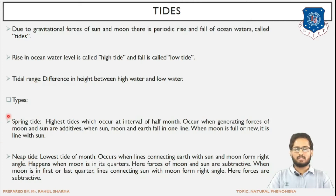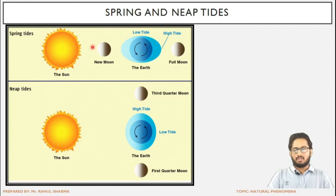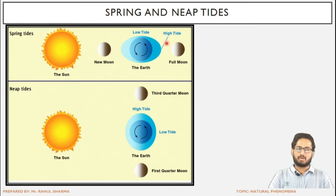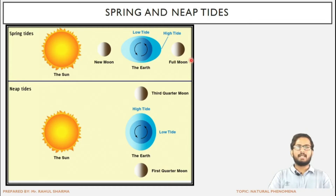First we will learn these two types and then see them theoretically. The spring tides occur when the Earth, moon and sun are in the same line. The neap tides occur when the sun, Earth and moon are making a 90-degree angle or are perpendicular. When the sun, Earth and moon are in the same line, the gravitational forces of the sun and moon combine, generating waves of high height — those are the spring tides.